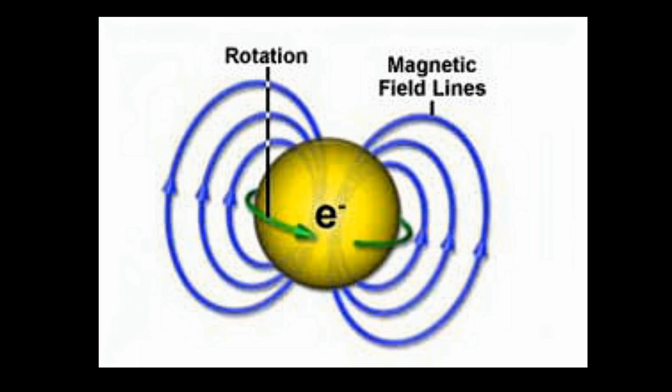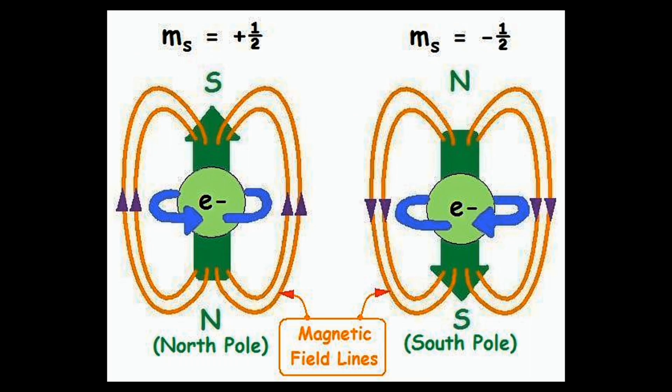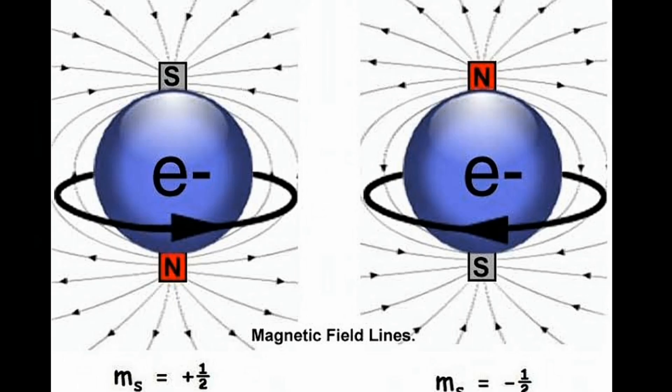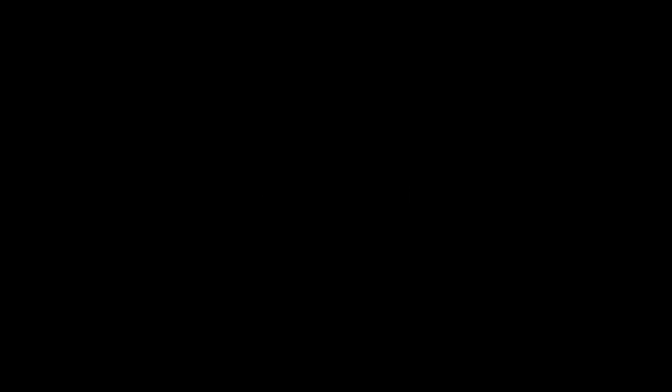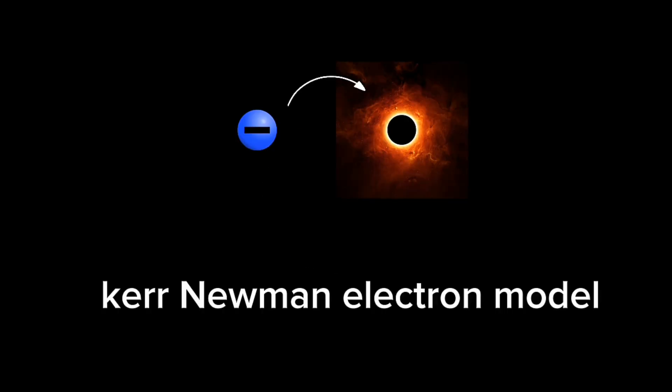This means that the spin of the electron generates a magnetic field around itself. The ratio of spin to magnetic field generated in the case of the electron is called the gyromagnetic ratio or the g-factor. The Dirac relativistic quantum theory predicts a g-factor of two for the electron.